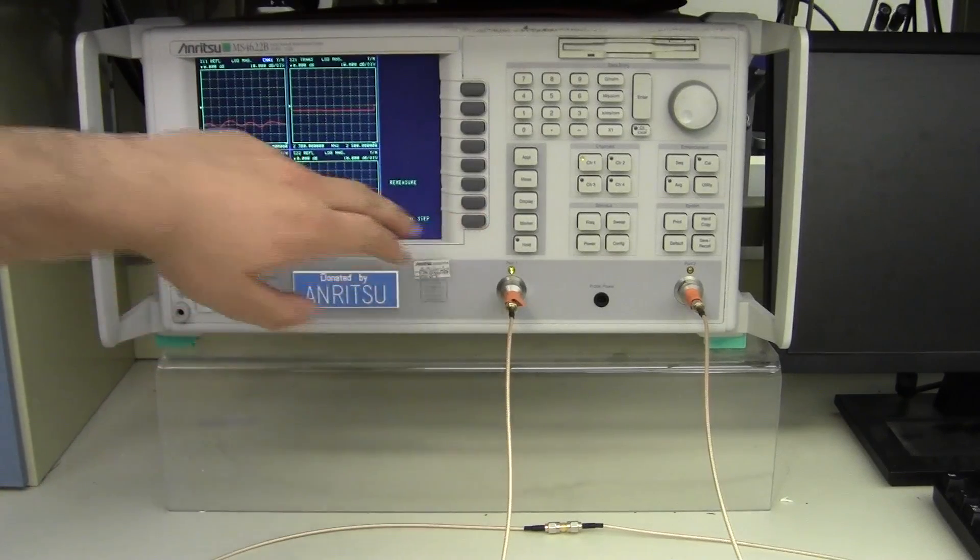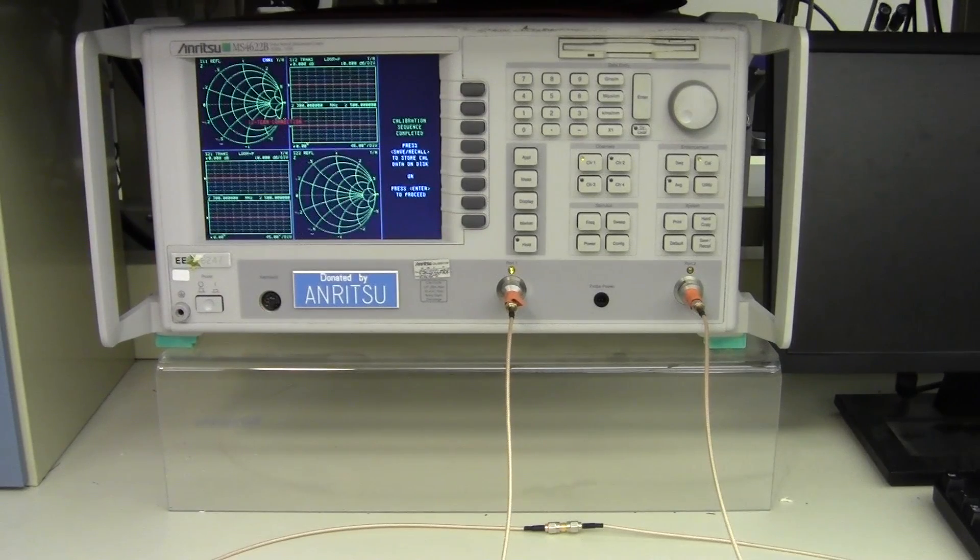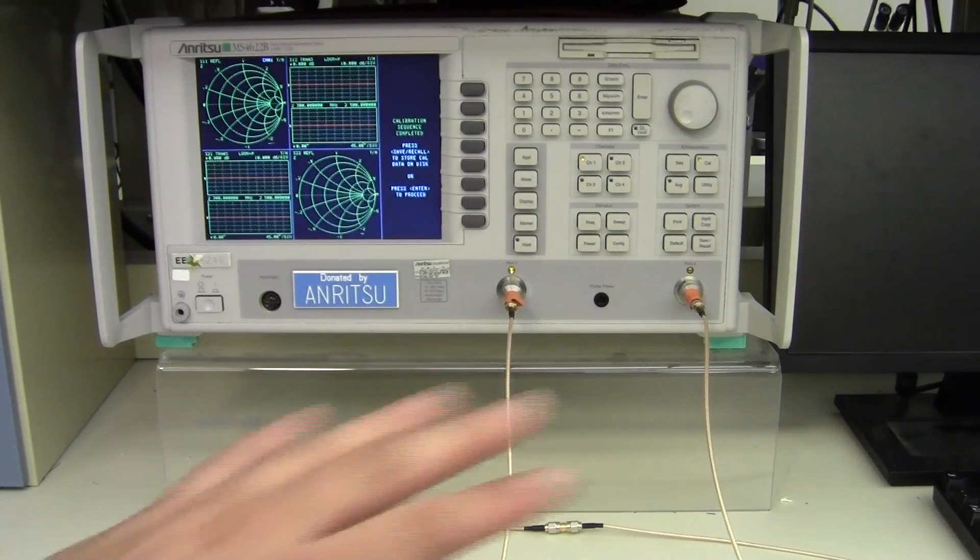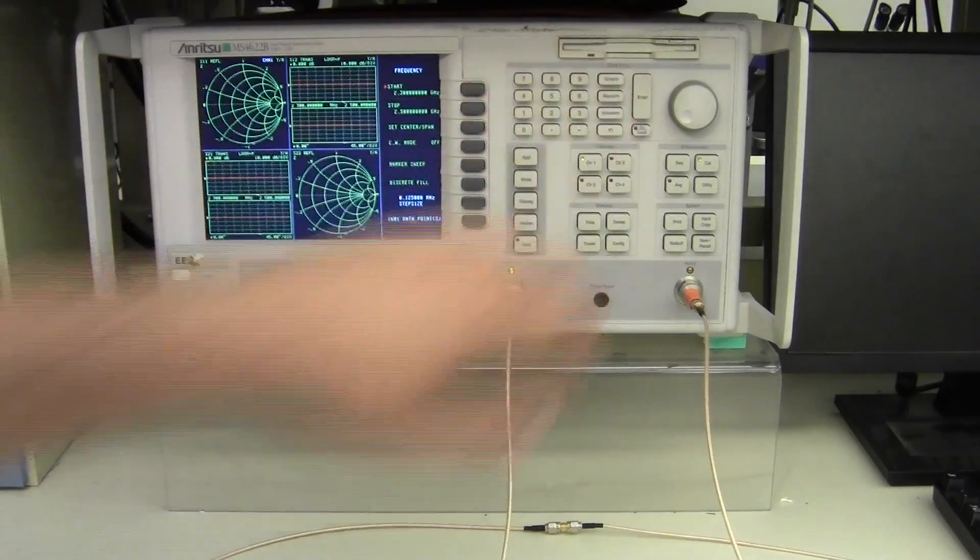Measurement completed. Next calibration step. And it says calibration sequence complete. Press save recall to store calibration or press enter to proceed. Since these calibration readings are only valid for these specific pieces of coax in this specific configuration, there isn't much point in saving your calibration. And so we'll just move on.